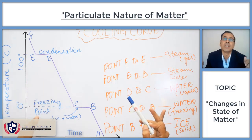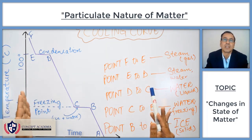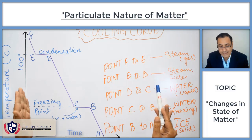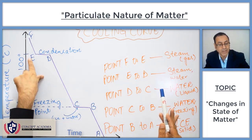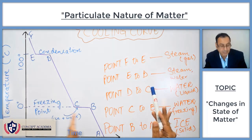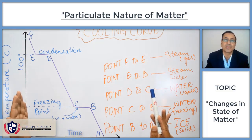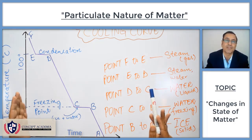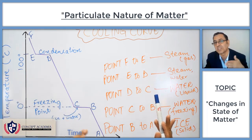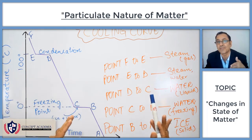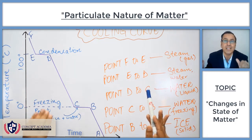Between E and D, both states of matter — steam and liquid — coexist. You can see that from point E to D, time is passing but the temperature remains the same. Again, it is the change in the state of matter. When one state of matter converts into another, the temperature remains the same, and that is the latent heat.